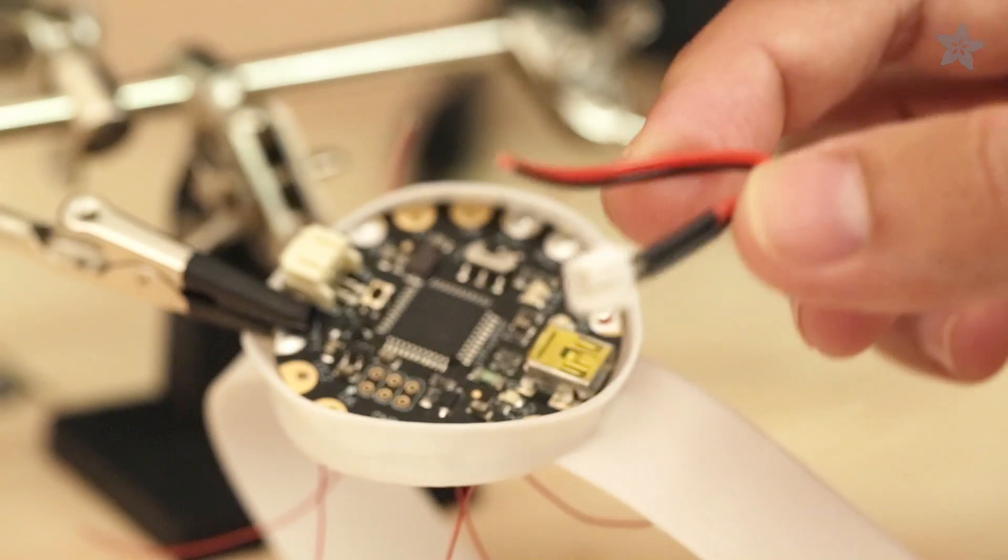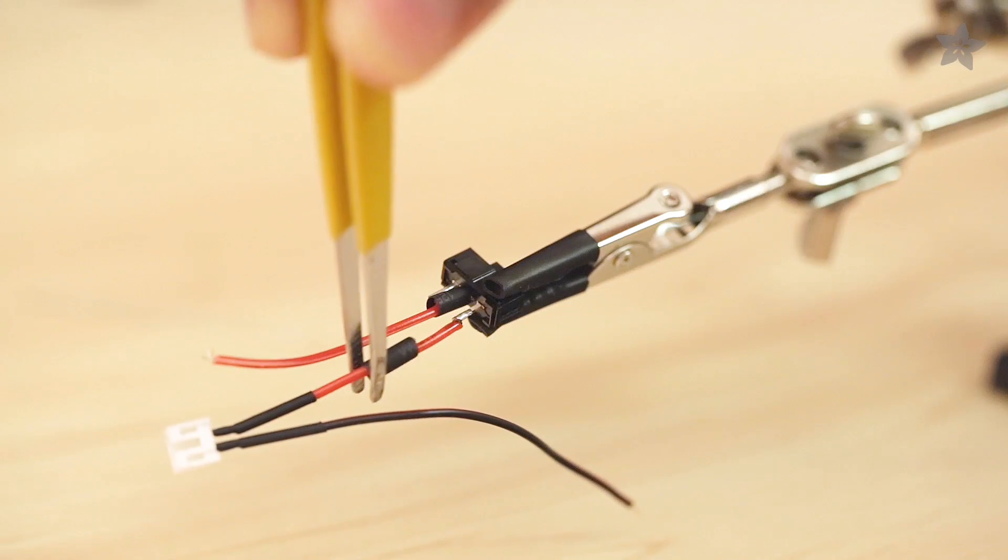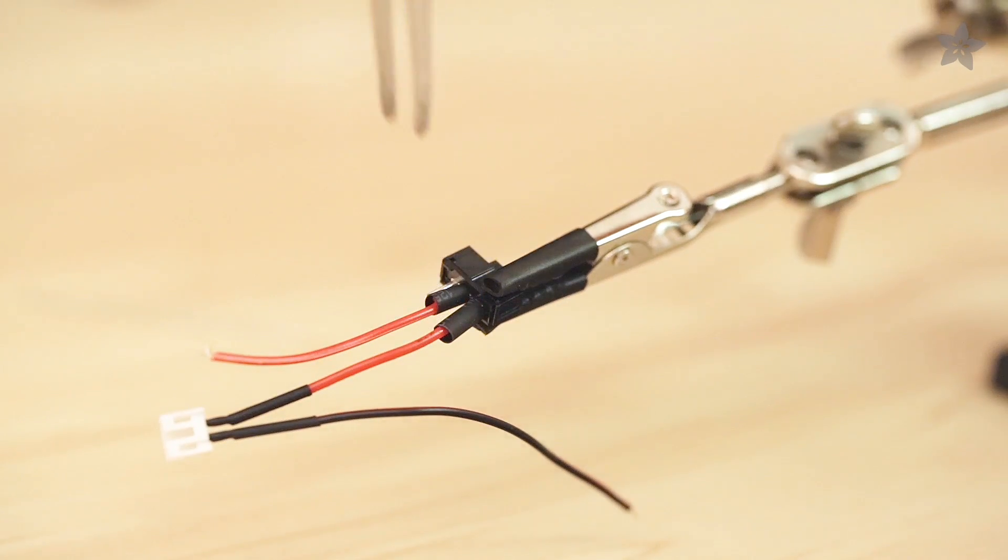To make the circuit more compact, we'll solder on an extra JST connector to the onboard one. A slide switch makes it easy to power the circuit on and off.